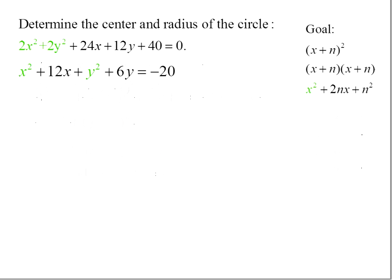We're going to rearrange this so that our x terms are together: x² + 12x, and our y terms are together: y² + 6y. And we move the 20 to the other side, which makes it negative 20.